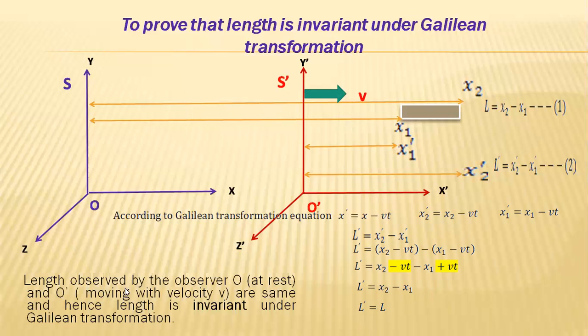It is clear that length observed by observer O and O' are the same, and hence length is invariant under Galilean transformation. For example, if you take a 5-meter rod and place it in a moving vehicle, the length of 5 meters is the same for the observer inside the moving vehicle and for the observer outside. Therefore length is an invariant quantity.